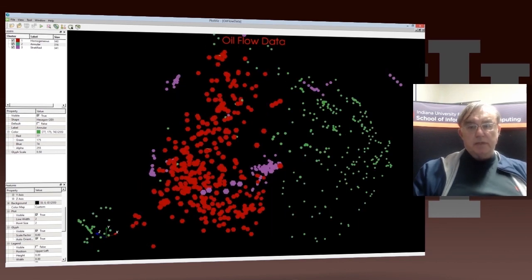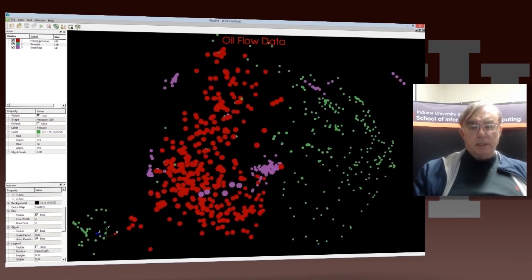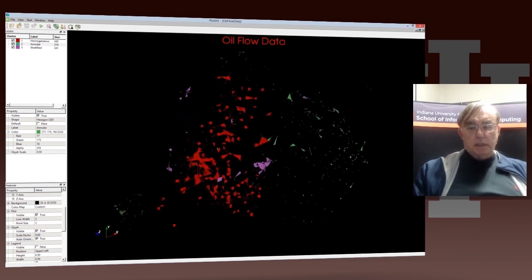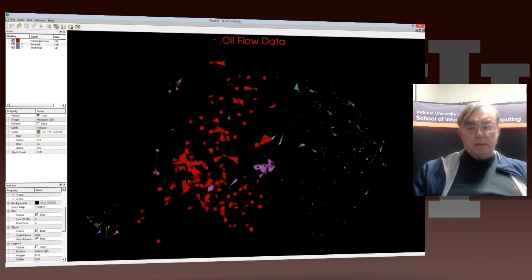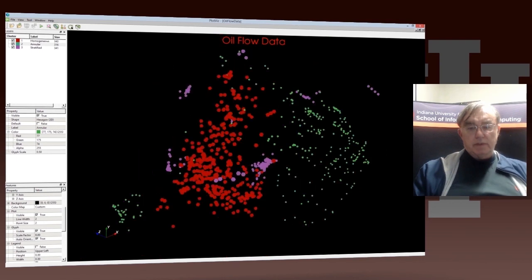Sorry, the left mouse. If we do the right mouse, then we actually change the scale. So we can make it smaller or bigger. And that's the oil flow data.